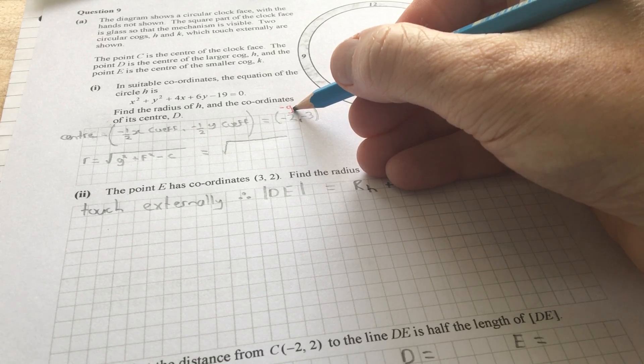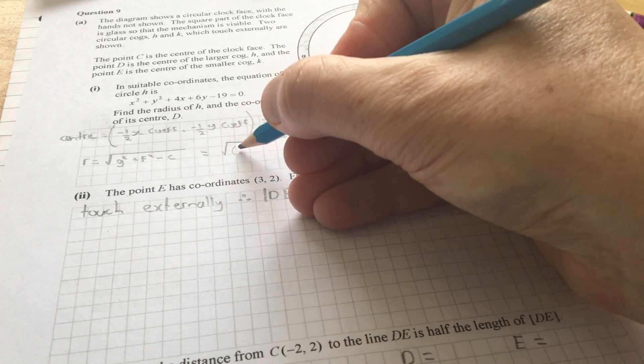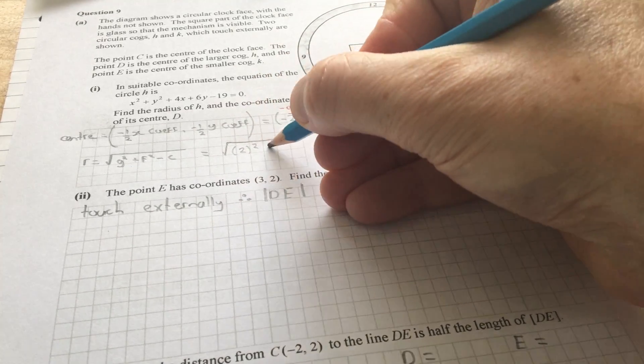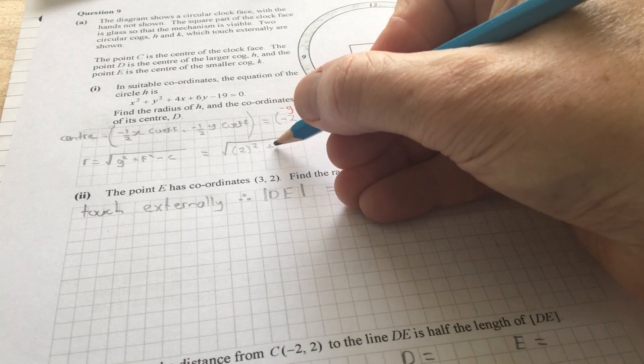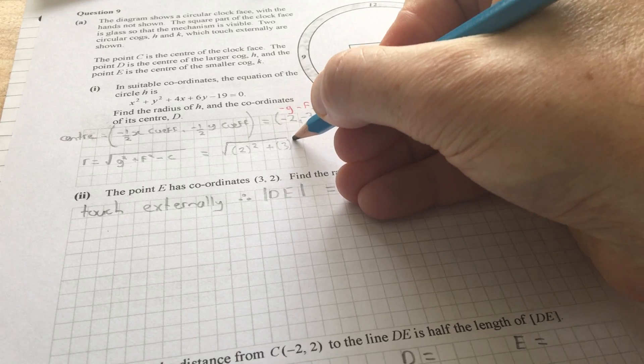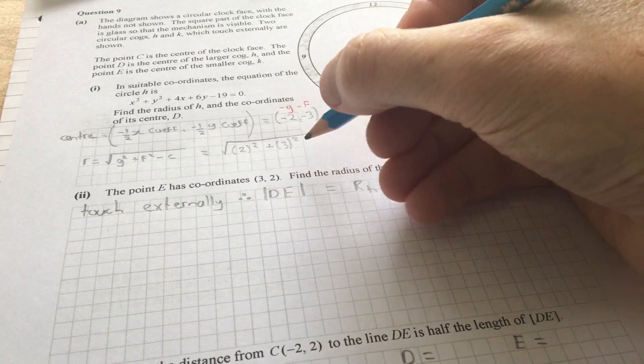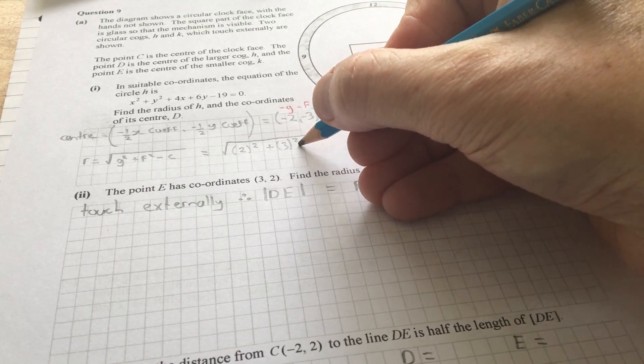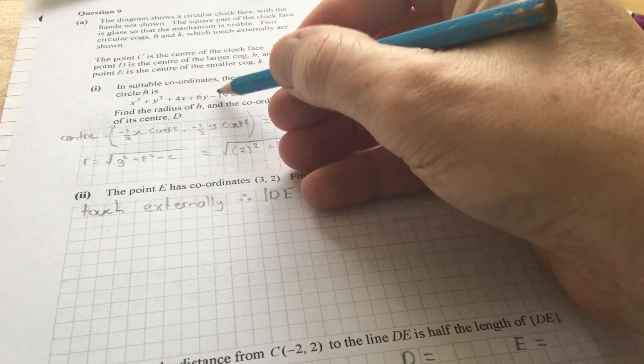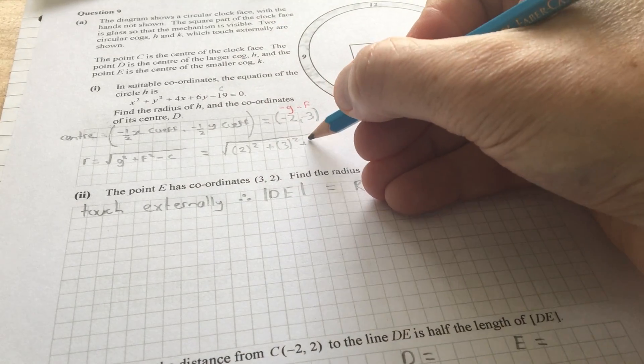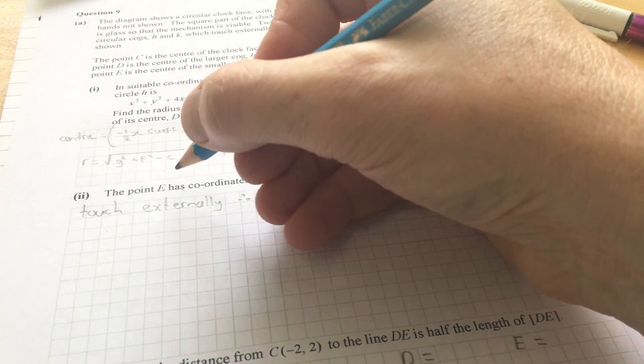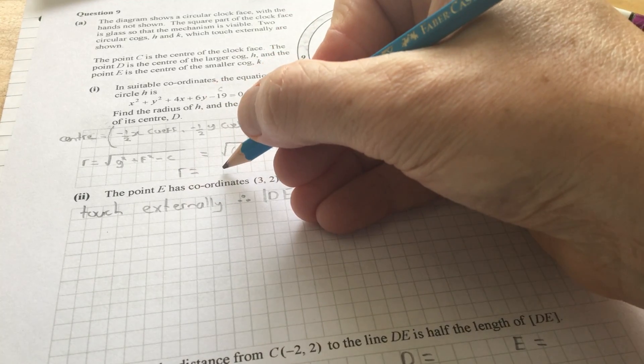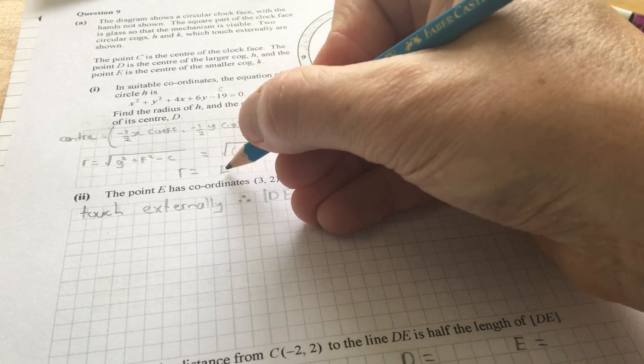Again, now the center is minus g, so therefore g will be 2. So, 2 squared and f, or minus f is minus 3, so f is 3. But again, you don't really need to worry about that, because squaring it should remove any problem there. And then minus c, so this is c, so minus minus 19 is plus 19. And when you put that into your calculator, you'll find that the radius of that circle is 4 square root of 2.